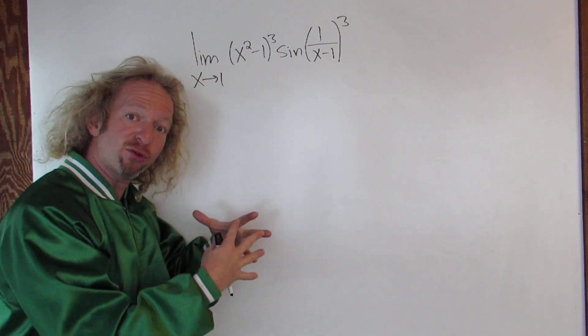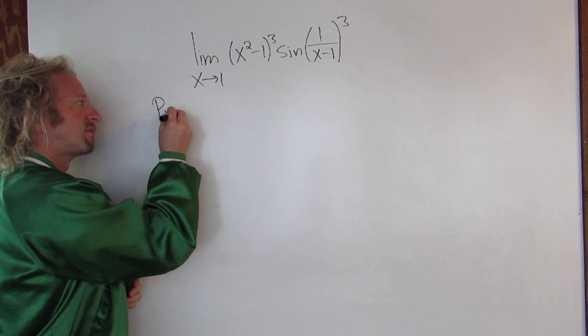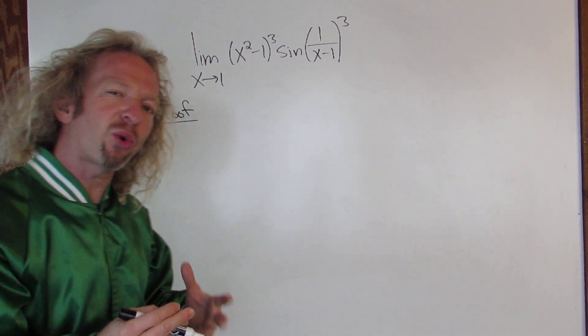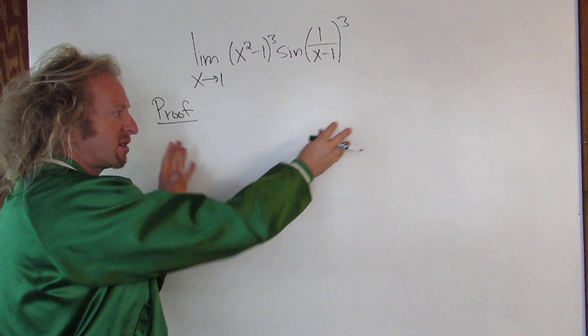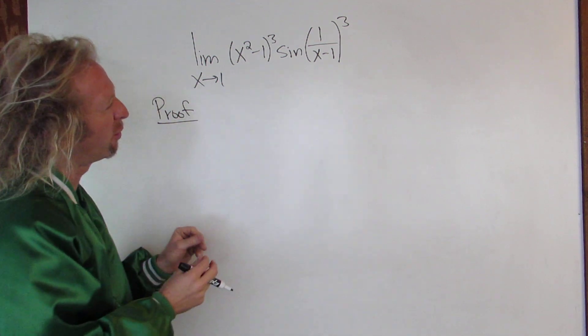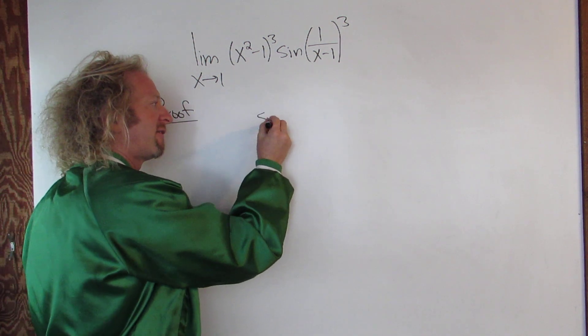So let's go through a proof. Let's prove that this limit is equal to 0. The squeeze theorem requires that we start with an inequality, right? We have to set this between two other things and we have to take the limit of those two other things at some point. So we know that the sine function is bounded. So we'll start by writing down that fact.